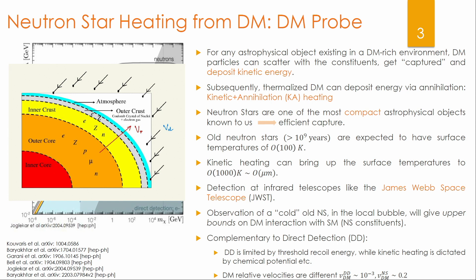As mentioned, neutron stars — any astrophysical object that sits in a dark matter-rich environment — can collect dark matter from the ambient environment by scattering of dark matter particles with constituents of that object. Neutron stars are the most compact astrophysical objects and therefore lead to very efficient capture. Dark matter can deposit energy into the neutron star via the kinetic energy deposited in each scattering, and also via annihilation if the annihilation products are thermalized inside the neutron star.